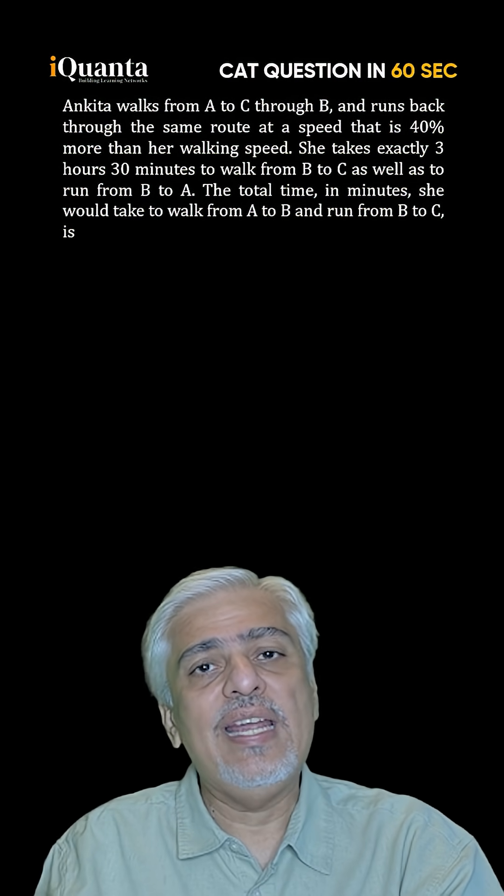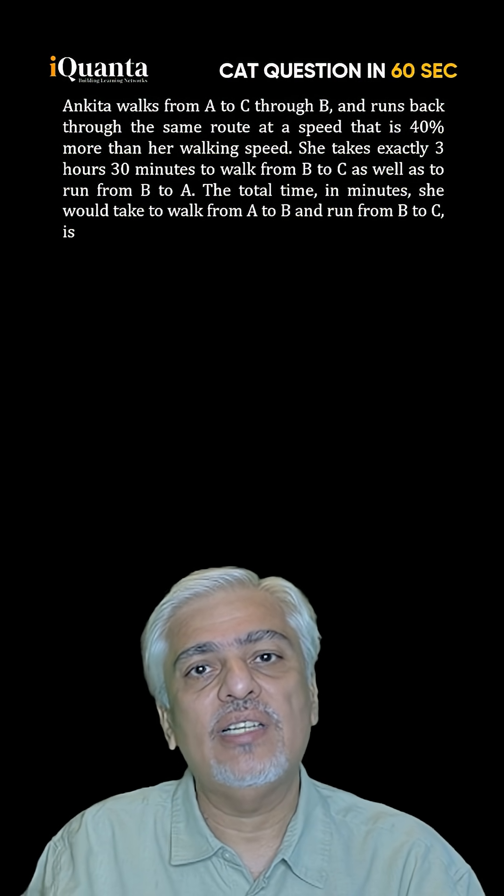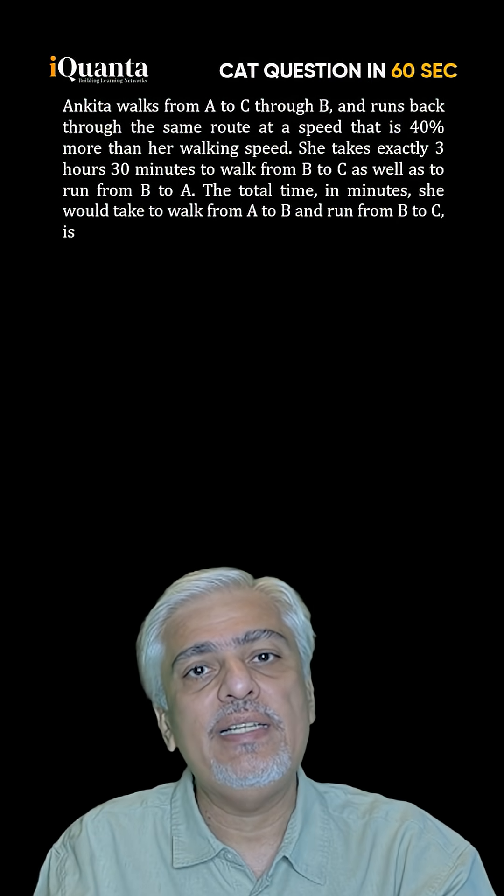Ankita walks from A to C through B. One part of the journey she walks and the other she runs at which is 40% higher speed than walking.